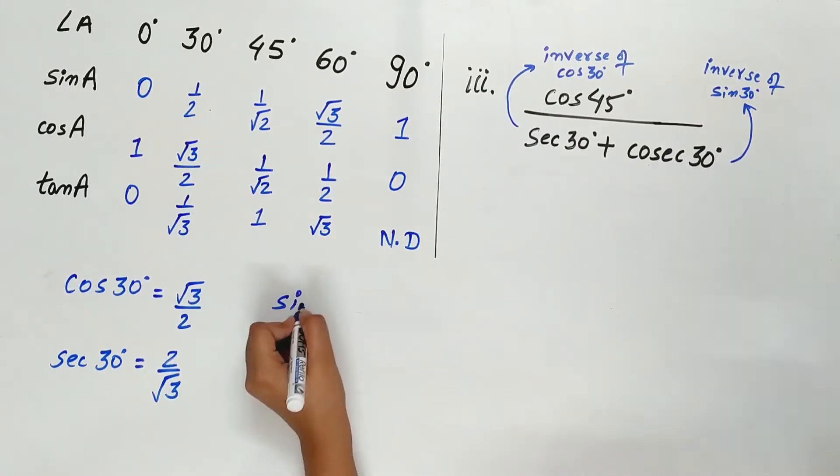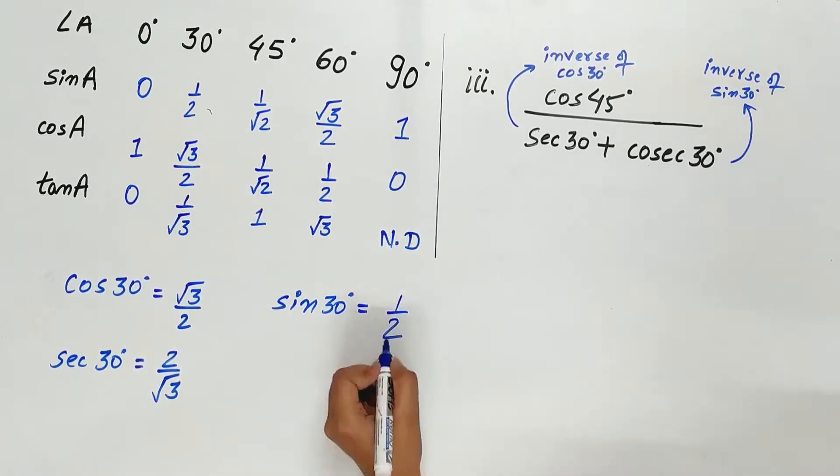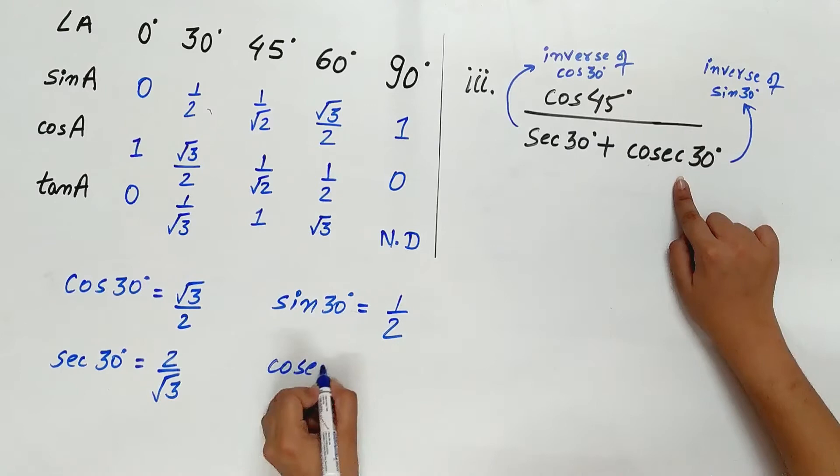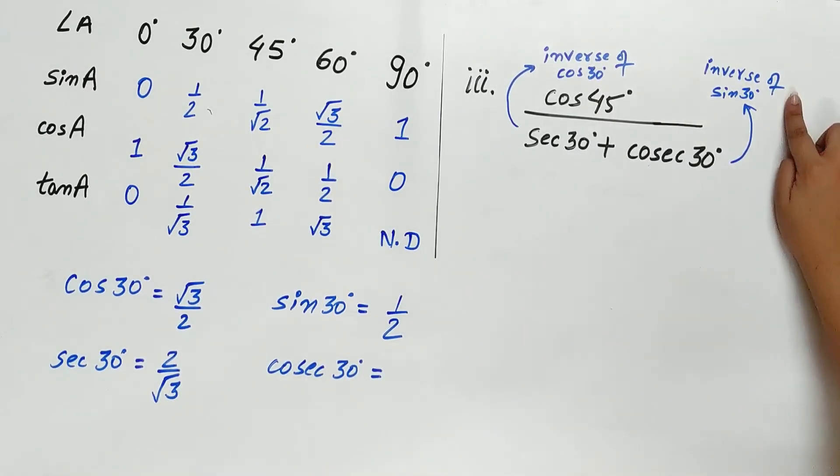Let's find out cosec 30. Sine 30 is 1 by 2. So cosec 30 is inverse of sin 30, that is 2.